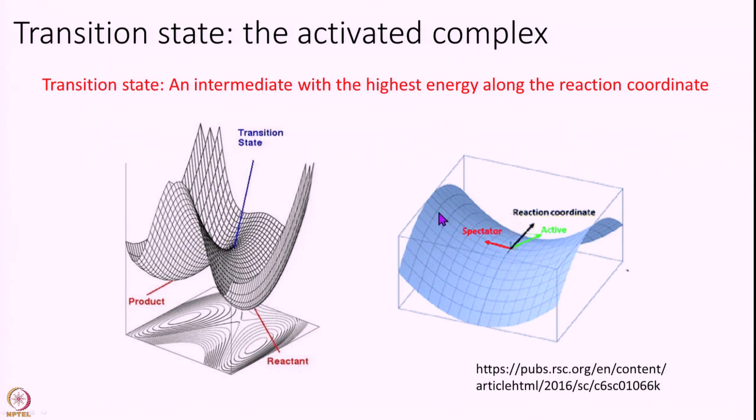Along the reaction coordinate here - let me get my pen back - this is my reaction coordinate. Along this line my transition state is the maximum energy structure. But if I draw a line like this which is perpendicular to the reaction coordinate, then you see that the transition state is a minimum energy structure.